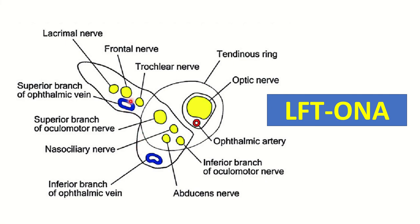The structures passing through the superior orbital fissure are mainly nerves and veins. There is no arterial component in the superior orbital fissure. So when answering a question about the superior orbital fissure, we have to remember that there is no arterial component.